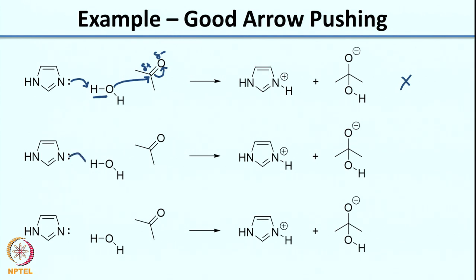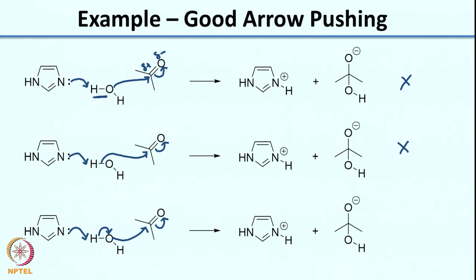Let us look at another example. The first step is the lone pair grabbing the proton. Sometimes people show the bonded electrons going to the electron-deficient carbon — this is not a good method because you are showing bonded electrons moving there, which is not actually the case. A good way to push the arrows: first show the nitrogen lone pair grabbing the proton, then show the electrons coming to the oxygen from the bond, then show the oxygen attacking the electron-deficient carbon, and finally show the C=O double bond electrons moving onto the oxygen. This is the best method to represent the transformation.